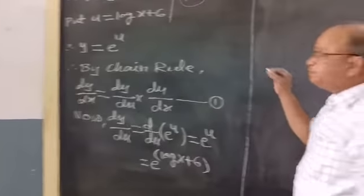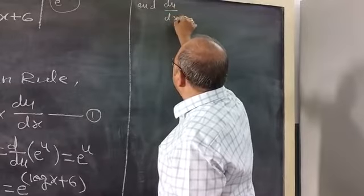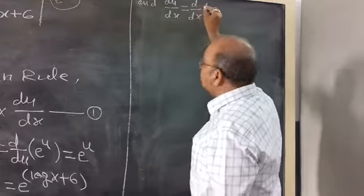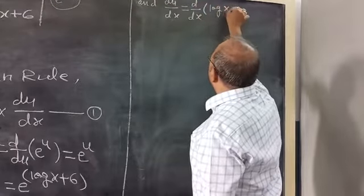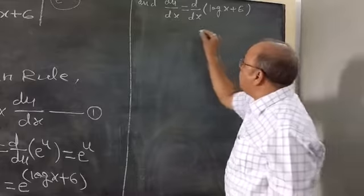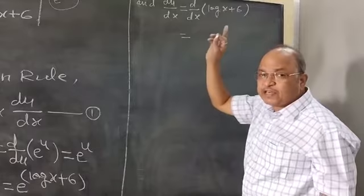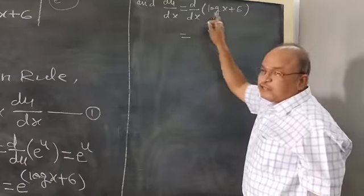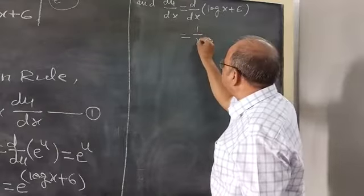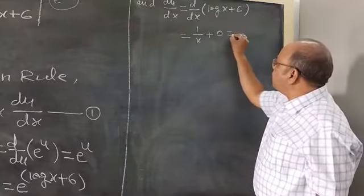The second derivative du by dx is the derivative of u with respect to x, and u in terms of x is log x + 6. The derivative of log x is 1 upon x, and the derivative of the constant 6 is 0. So du by dx = 1 upon x.